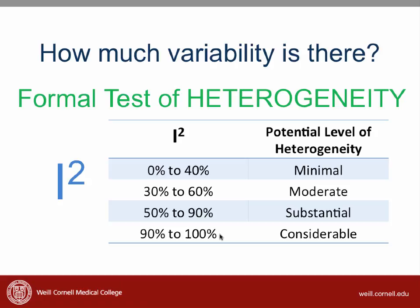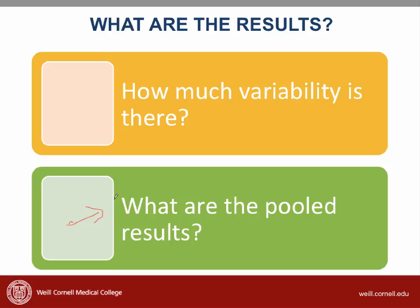Going back to our checklist, we now want to know what are the pooled results. We discussed earlier how authors often show a table with all the qualitative results of the studies that they included. The methods for pooling results in a meta-analysis can be very complicated, but in simplistic terms, I like to think about the pooled results as a weighted average of all the results of the individual studies. That's a simplistic interpretation, but it should help you understand some of the statistics behind it.